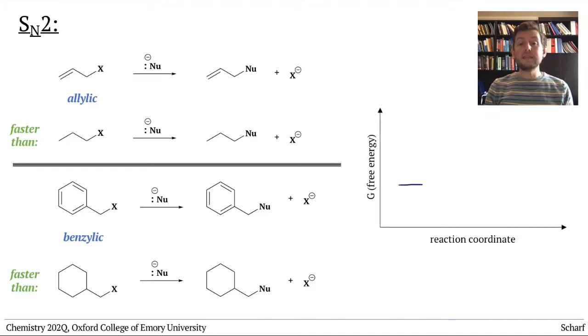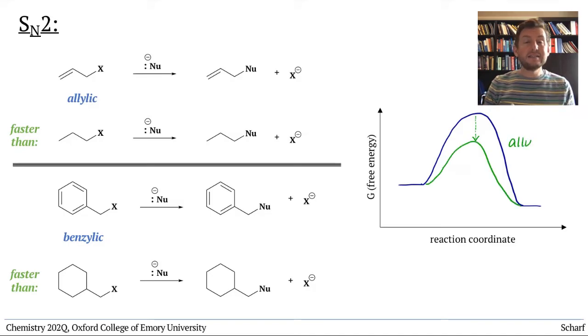This must mean that the activation energy barrier for the SN2 reaction at allylic and benzylic sites is somehow lowered, which implies that the transition states for allylic and benzylic SN2 reactions are stabilized.